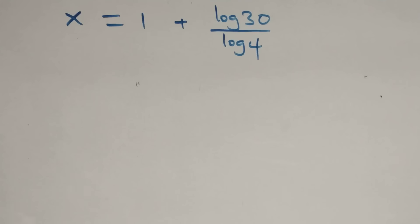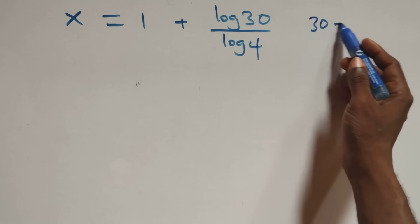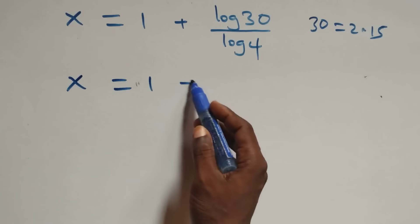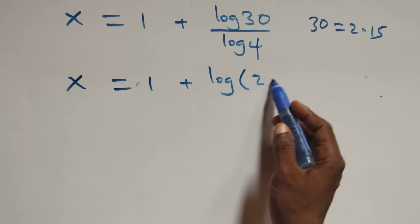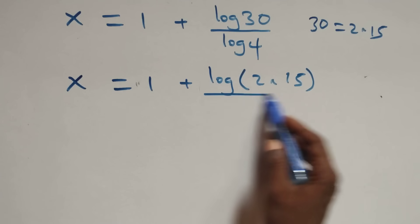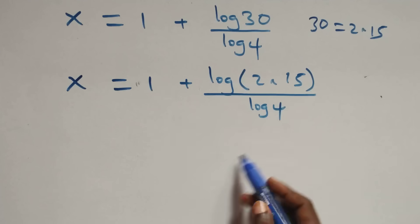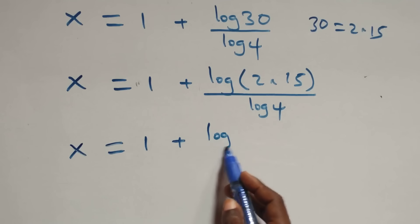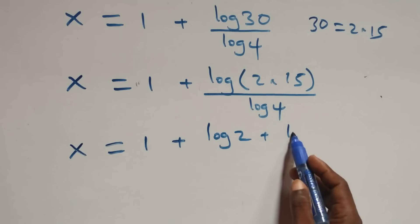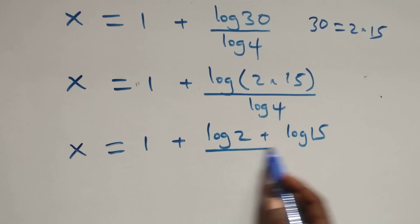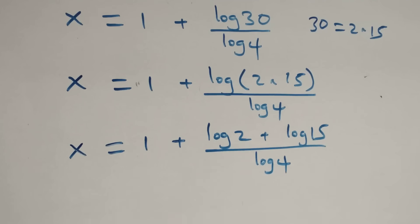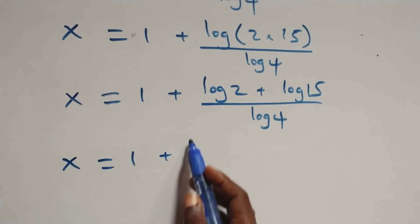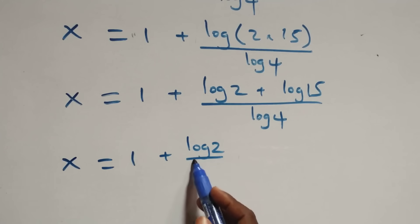Next step, we can write 30 as 2 times 15, which implies x equals 1 plus log(2 × 15) over log 4. This also follows the logarithm product rule, giving x equals 1 plus (log 2 + log 15) over log 4. We separate this into two fractions: x equals 1 plus log 2 over log 4 plus log 15 over log 4.